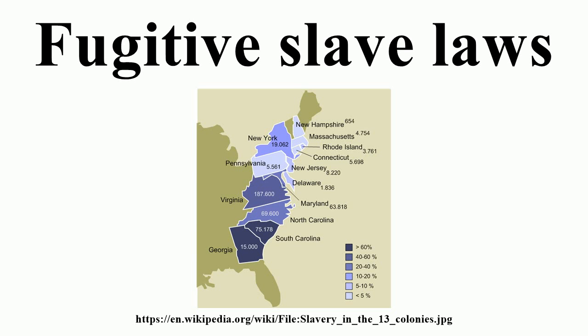Attempts to carry into effect the law of 1850 aroused much bitterness. The arrests of Thomas Simpson of Shadrach Minkins in Boston in 1851, of Jerry M. Henry in Syracuse, New York in the same year, of Anthony Burns in 1854 in Boston, and of the two Garner families in 1856 in Cincinnati, with other cases arising under the Fugitive Slave Law of 1850, probably had as much to do with bringing on the Civil War as did the controversy over slavery in the territories.